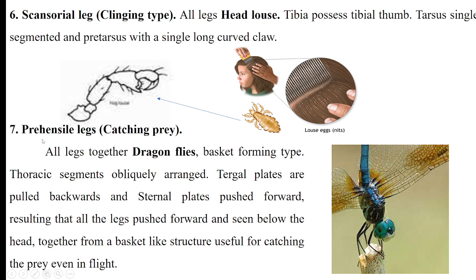Prehensile legs are also modified for capturing prey. All three pairs of legs in dragonflies are modified for this purpose. These legs are arranged to form a basket-like structure — hence also known as basket-forming type. Dragonflies can capture prey even during flight because of their well-developed prehensile legs. These legs are not used for walking or running but for sitting and capturing prey.